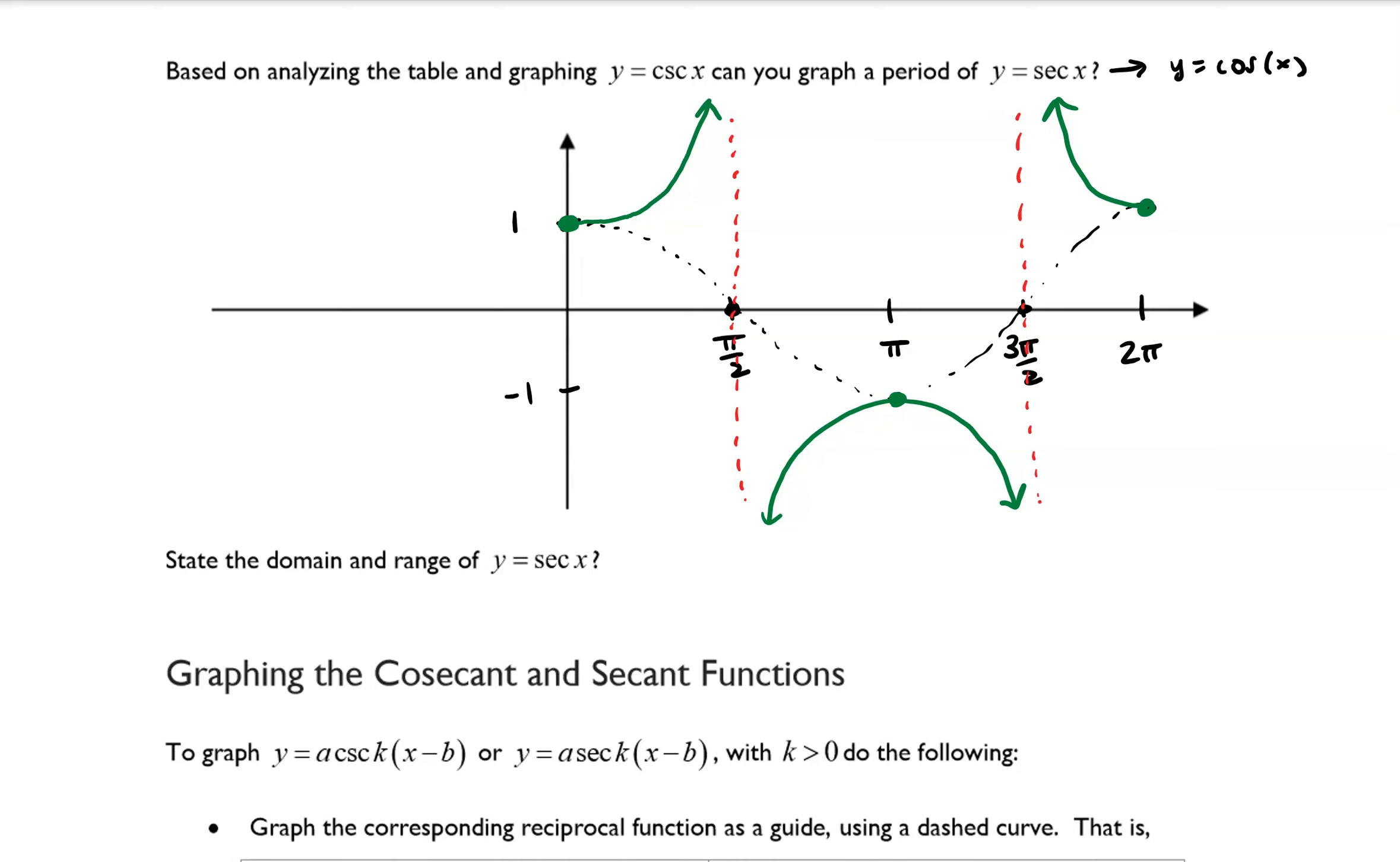State the domain and range of y equals secant of x. So the range, it turns out, is exactly the same as y equals cosecant of x. So the range is going to be negative infinity to negative 1 bracket, union 1 to infinity.